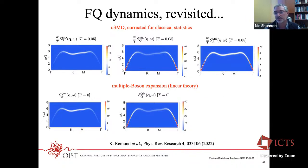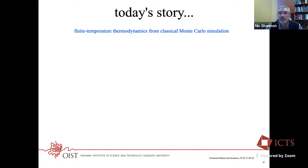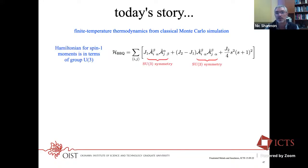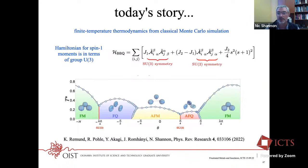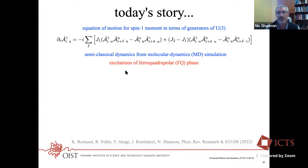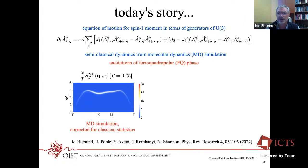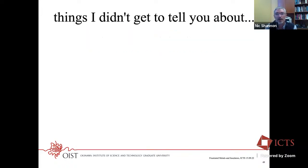So where does this leave us? The story covers finite-temperature thermodynamics from classical Monte Carlo simulation writing things in terms of A-matrices and generating a thermal ensemble governed by the Hamiltonian — studied for the spin-one bilinear-biquadratic model on a triangular lattice, finding a phase diagram. For dynamics, we concentrate on the ferroquadrupolar phase, and once we correct for classical statistics inherited from the Monte Carlo simulation, we get perfect agreement with the multiple-boson expansion.